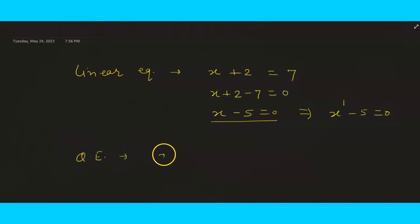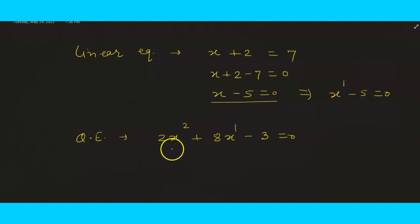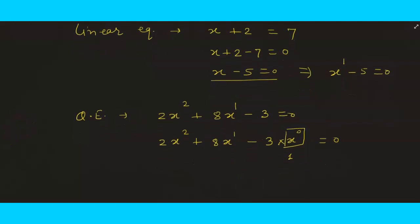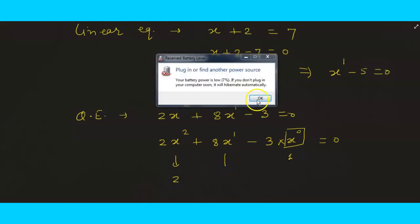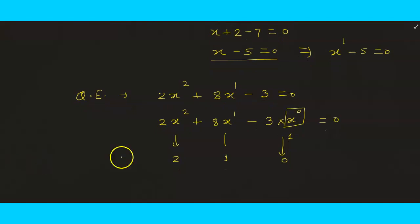In a quadratic equation, the highest power of x is 2. For example, 2x² plus 8x minus 3 equals 0. The highest power is 2. After 2, we have power 1, and with the constant term we have x to the power 0. So we can write it as 2x² plus 8x¹ minus 3·x⁰ equals 0. In this equation the powers of x are 2, 1, and 0, and the highest is 2 — that's why it is called a quadratic equation.